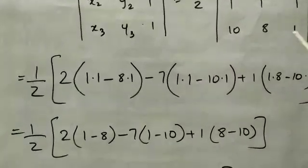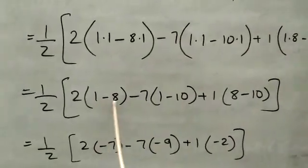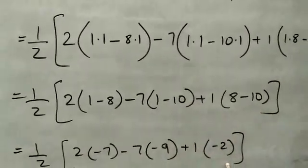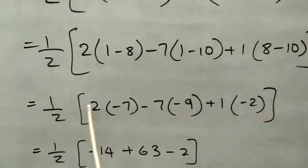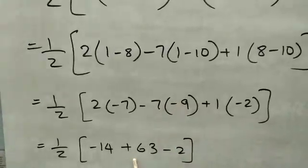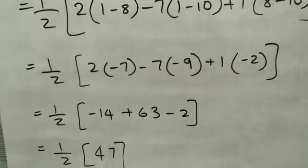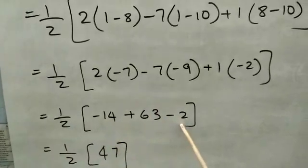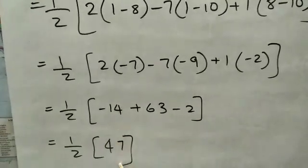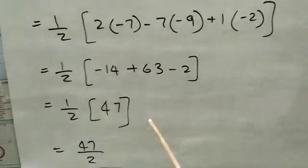Expanding the brackets and applying the sign rule: 1 minus 8 = minus 7; 1 minus 10 = minus 9; 8 minus 10 = minus 2. Then: 2 into minus 7 = minus 14; minus 7 into minus 9 = plus 63; plus minus 2. Simplifying: minus 14 minus 2 = minus 16; 63 minus 16 = 47. Final answer is 47 by 2.